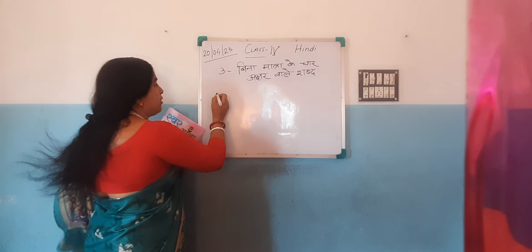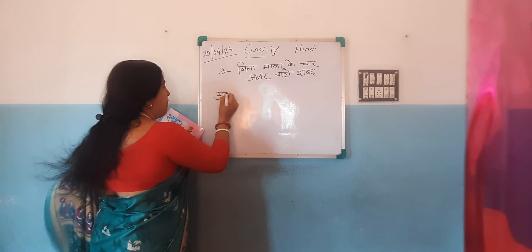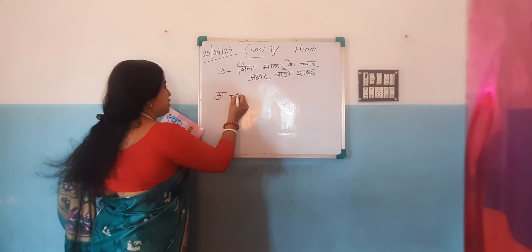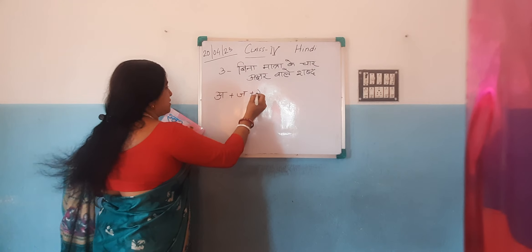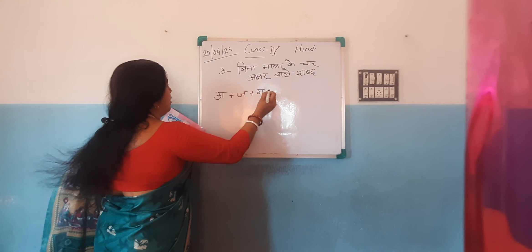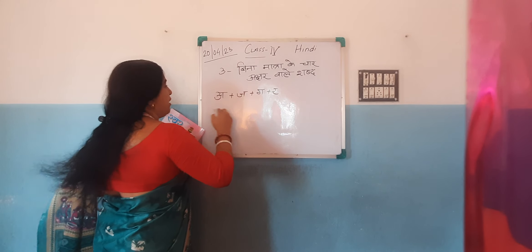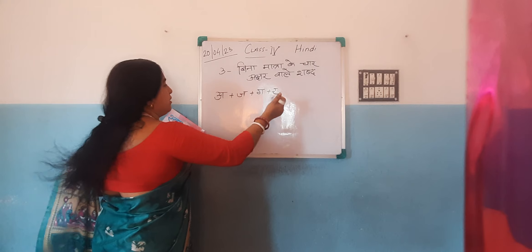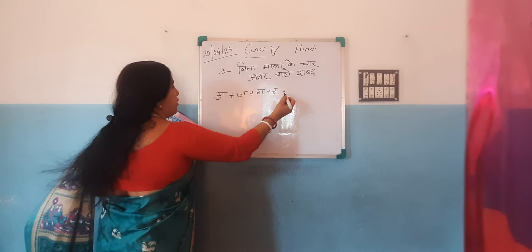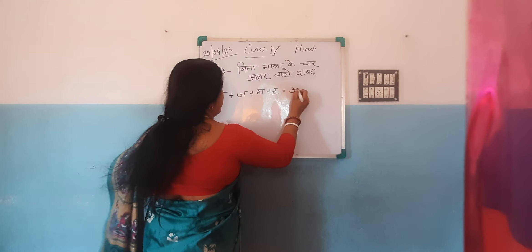Now look: A plus Ja plus Ga plus Ra. A, Ja, Ga, Ra. The word will be Ajigar.